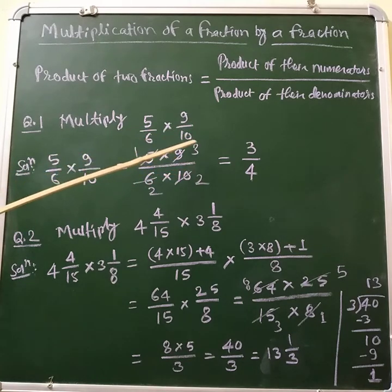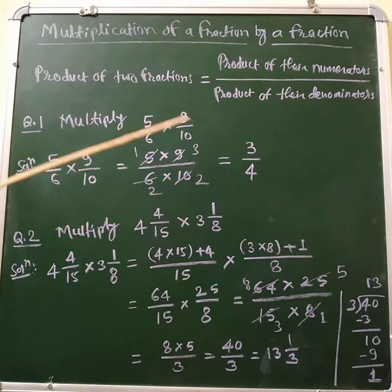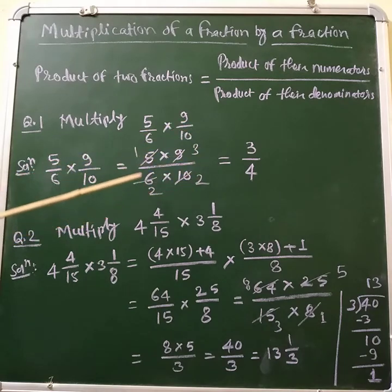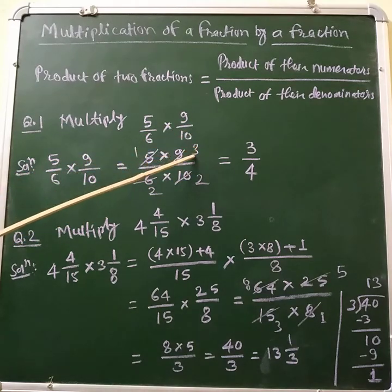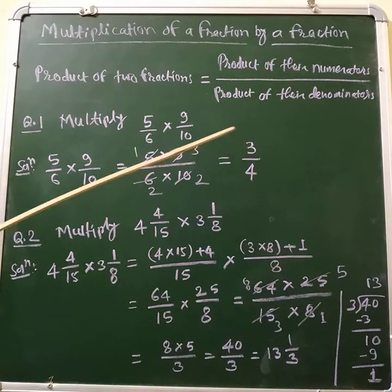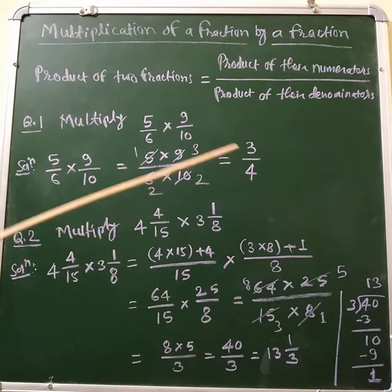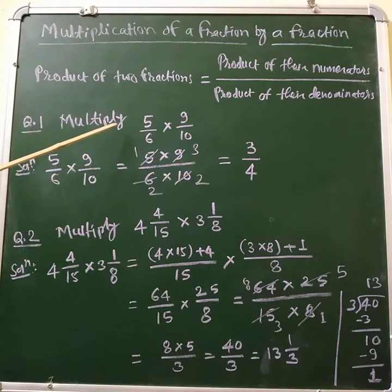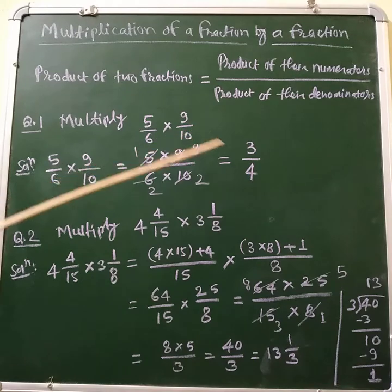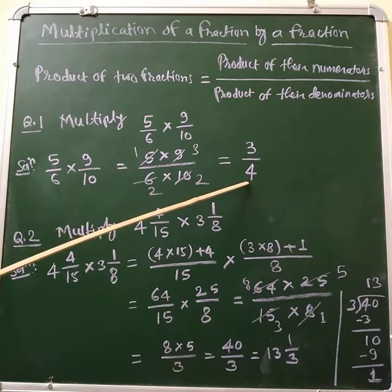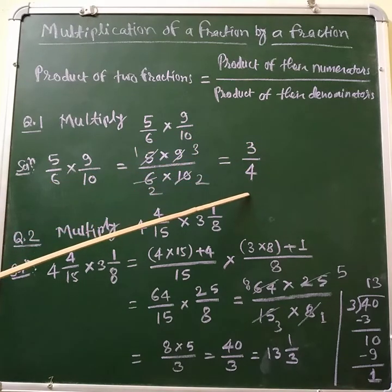Now it is in simplest form. So, 1 multiplied by 3 is 3, and 2 multiplied by 2 is 4. The product of 5/6 multiplied by 9/10 is equal to 3/4. It is a proper fraction.